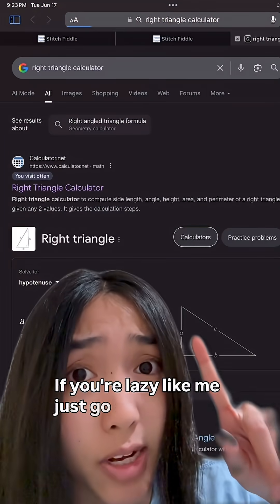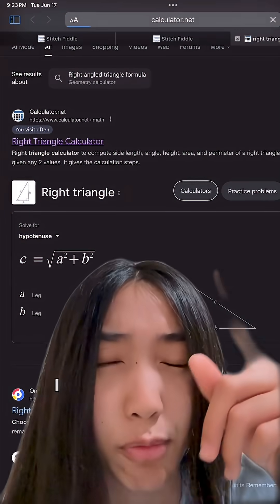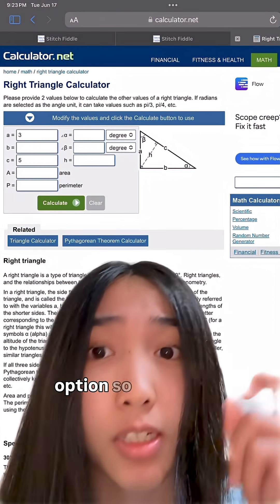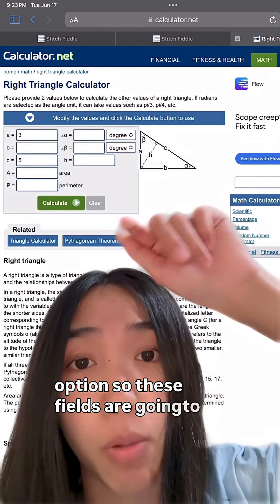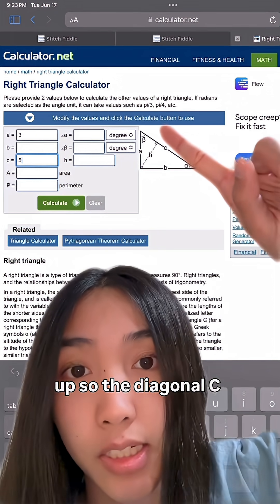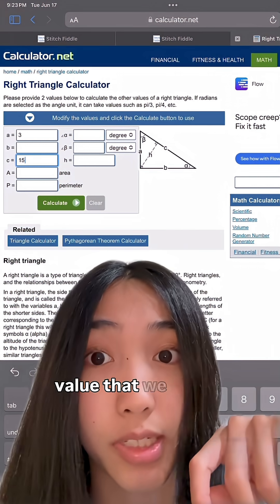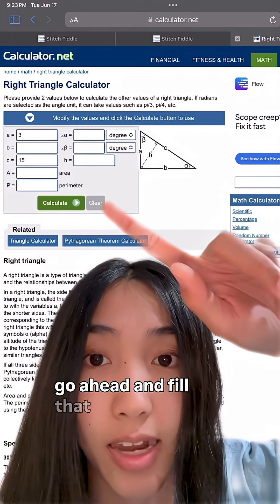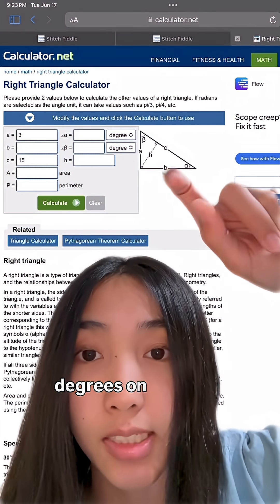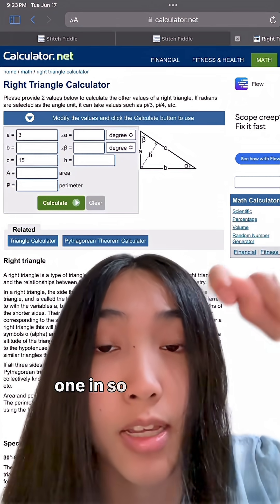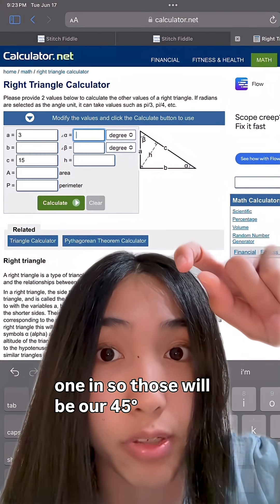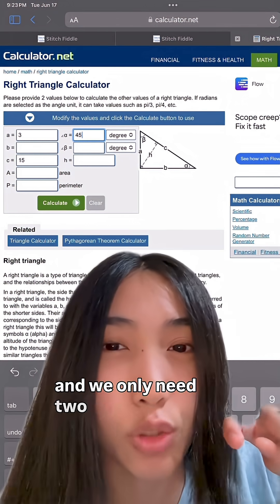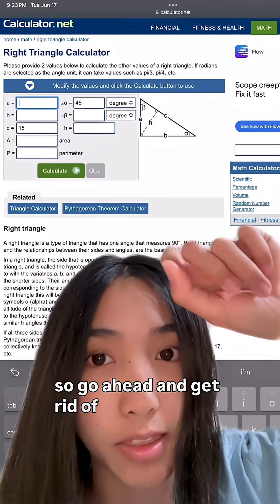If you're lazy like me, just go ahead and search up right triangle calculator. I went ahead and used that very first option. So these fields are going to pop up. The diagonal c is going to be that y value that we just calculated, so go ahead and fill that out. And the degrees on the side, we only need to put one in. So those will be our 45 degree angles. And we only need two values in total, so go ahead and get rid of that third one.